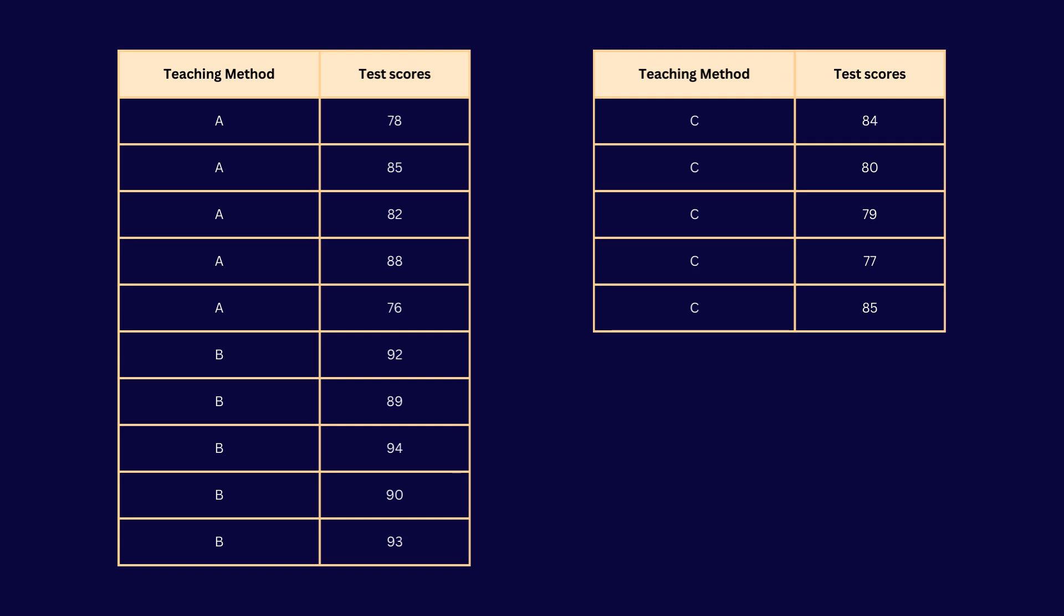So this is our dataset. In here we have two variables: teaching method and test score. We have three teaching methods - method A, method B, and method C.